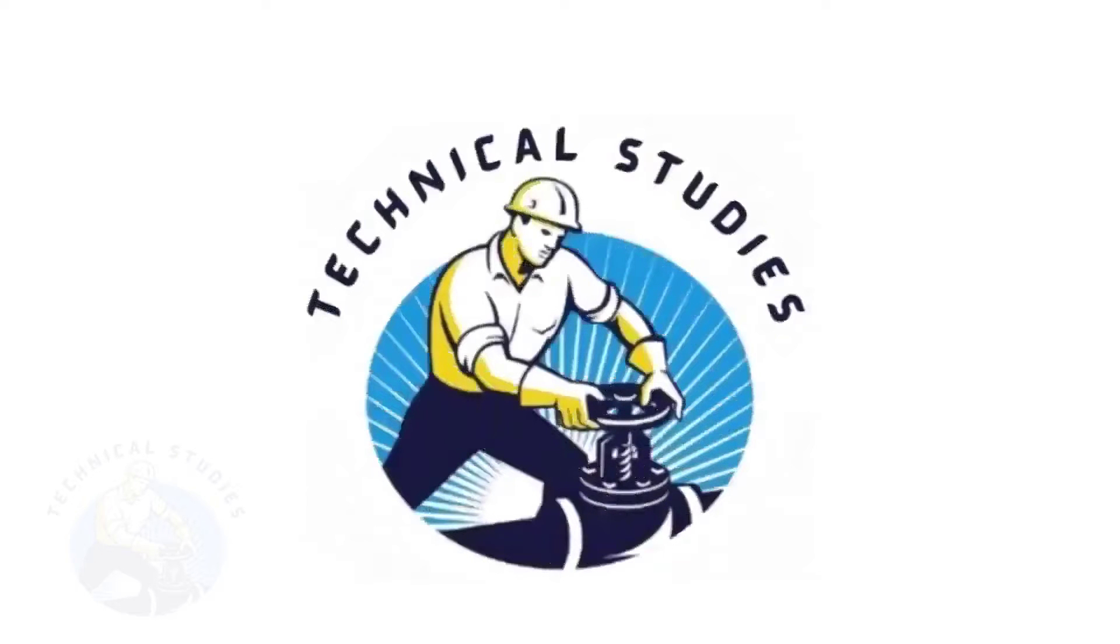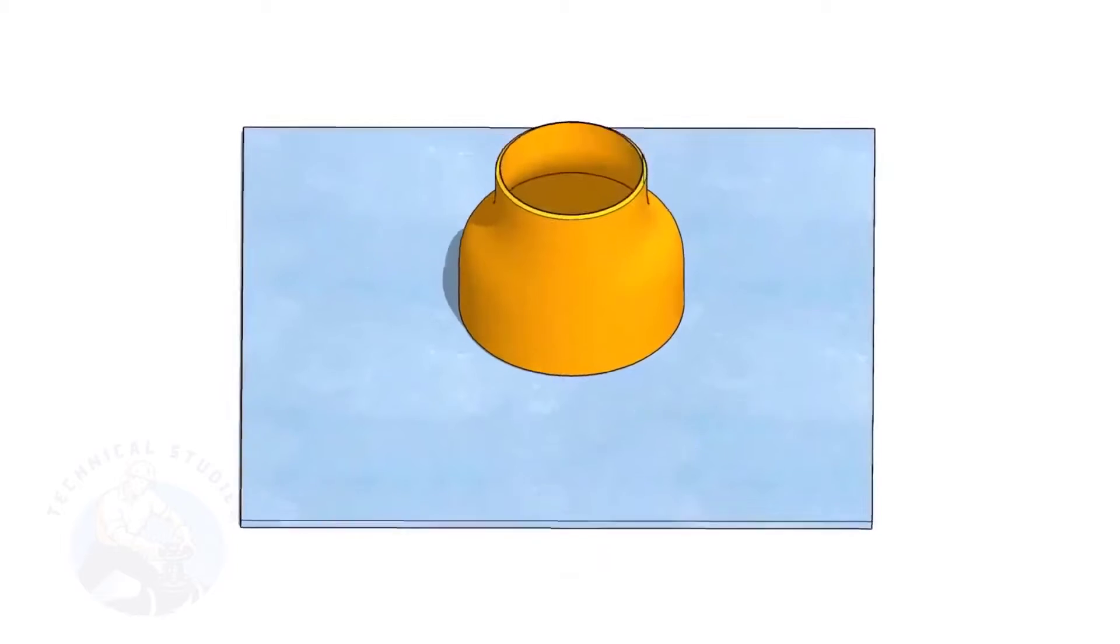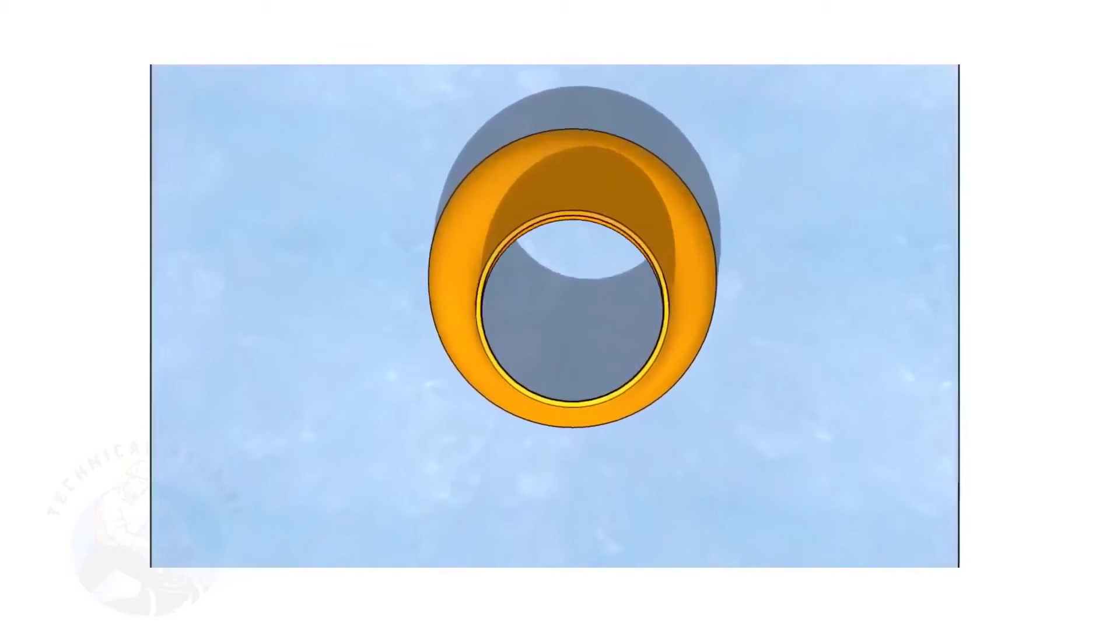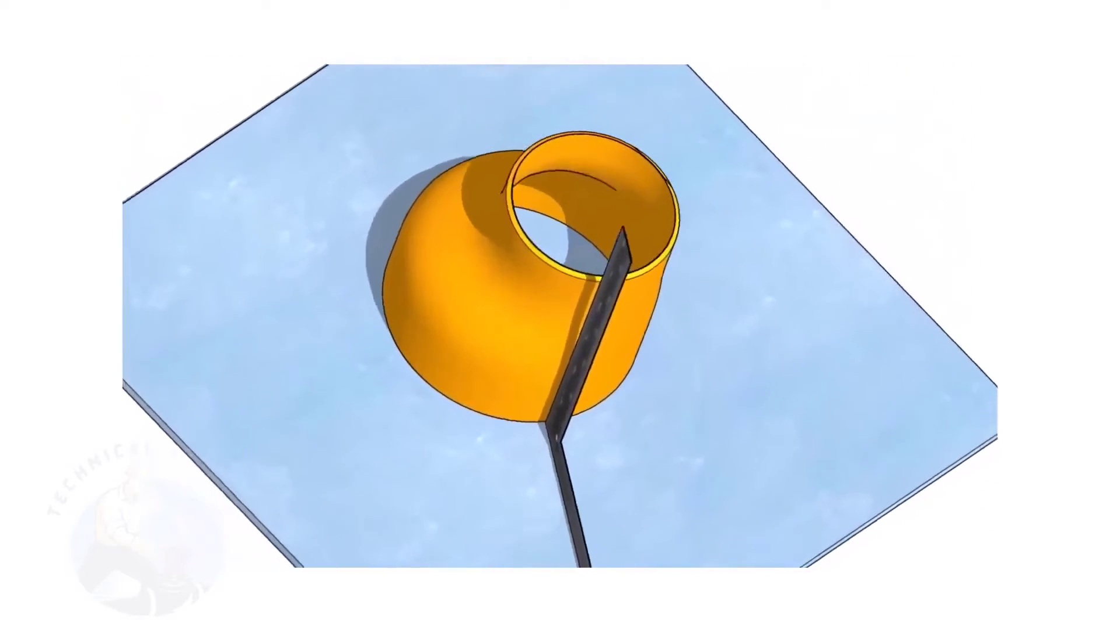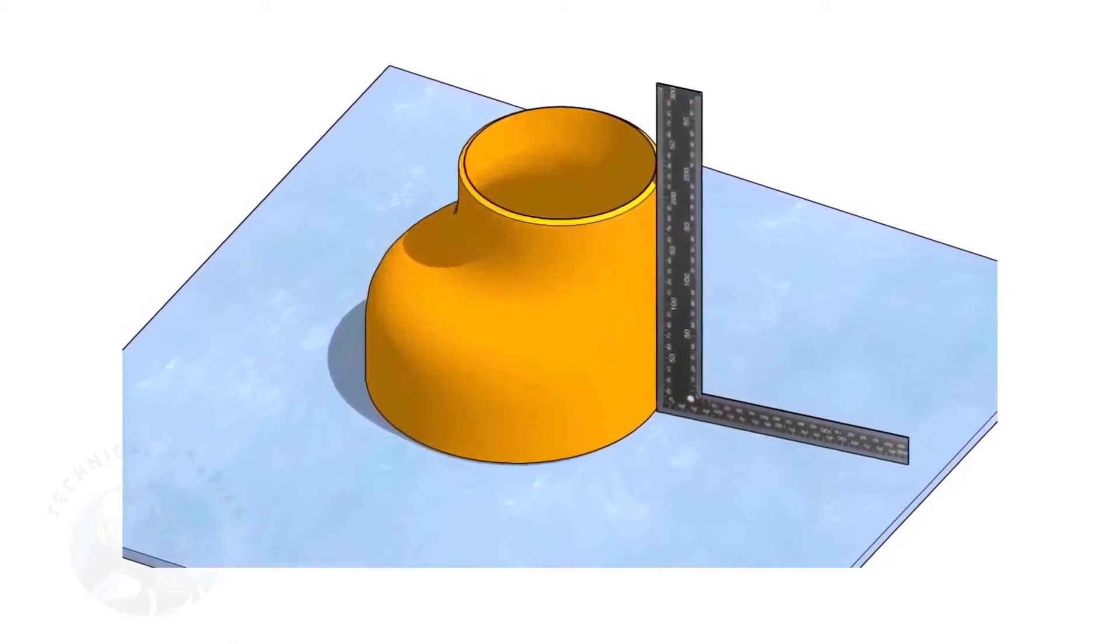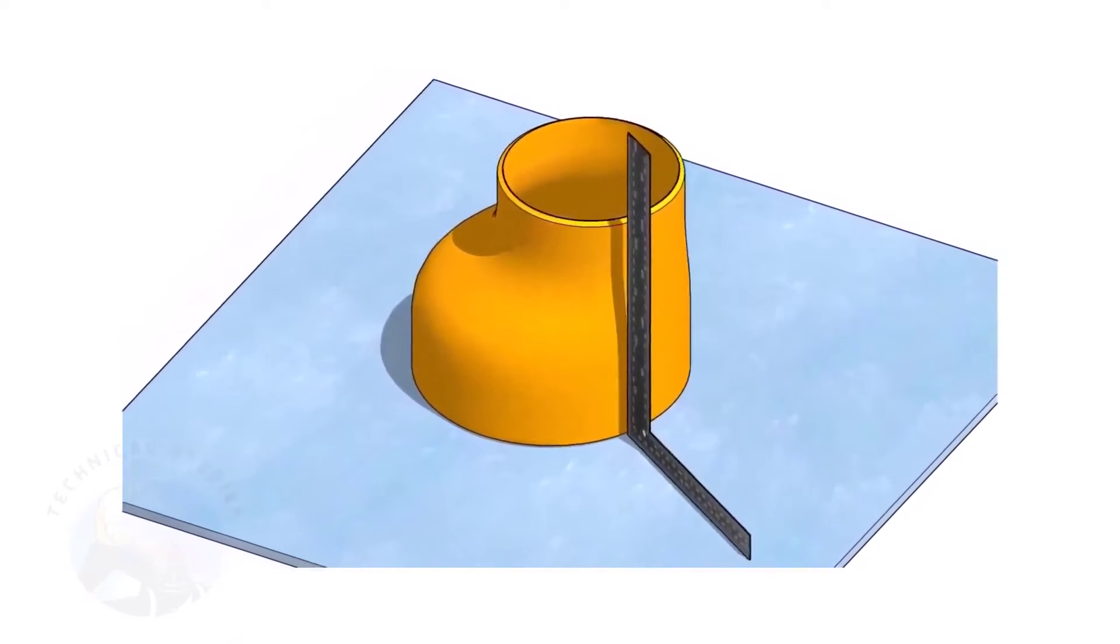Welcome to Technical Studies. Fitting an eccentric reducer to a pipe that is already fitted to another fitting like a flange, tee, elbow, etc. is a little tricky.